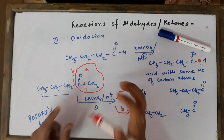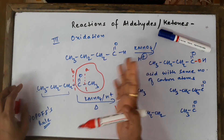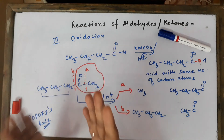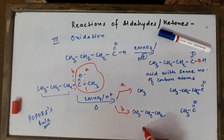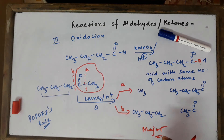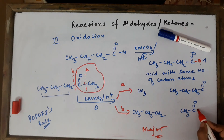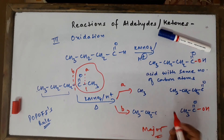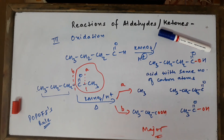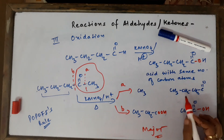Therefore, the bond that is broken is bond B, not bond A, and pathway B gives the major product. To write the answer: add OH to the carbonyl carbon on one fragment, and the CH₂ group converts into COOH on the other. Writing the products is not challenging once the correct bond is identified.